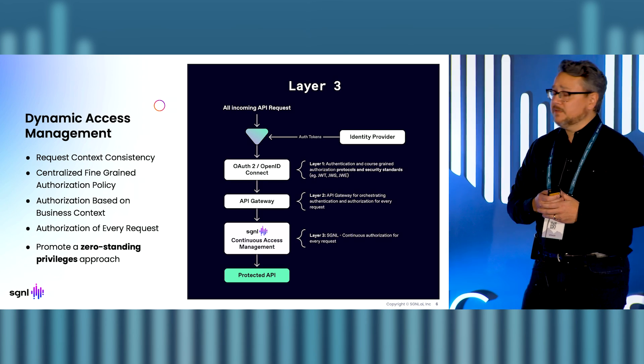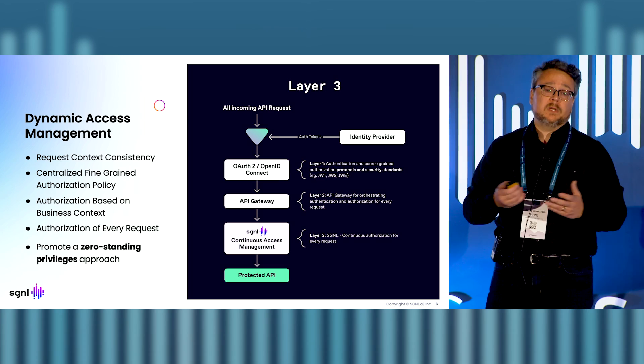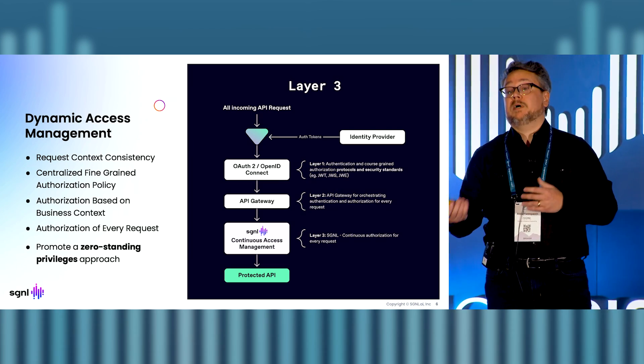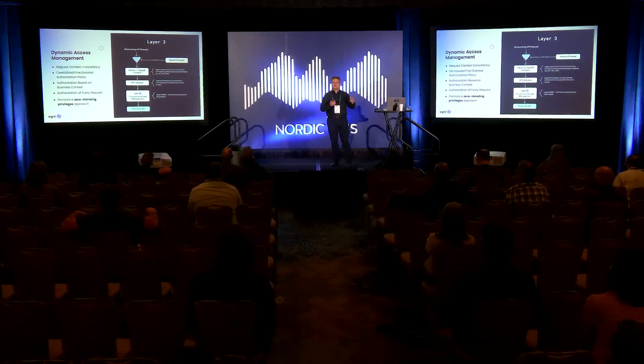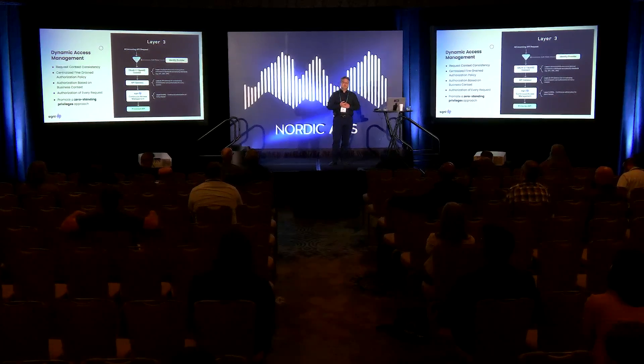There are several approaches for providing access control — several models. David is going to speak about policy-based access control. There's also relationship-based access control, role-based access control, and attribute-based access control. You could use one or all of those together to provide this layer of strength and context-based authorization for your API.